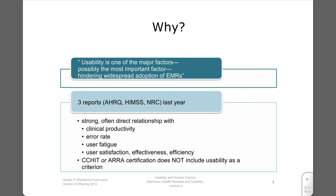However, CCHIT or ARRA certification does not include usability as a criteria in certification. Although there is a five-star rating system, vendors can choose to display their rating if they wish.